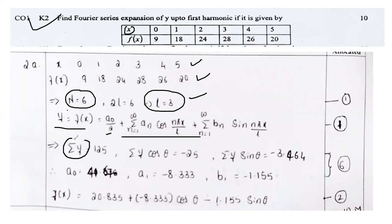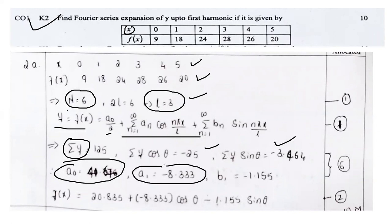Now compute sigma y, which will be equal to 125. Then sigma y cos(theta) equals minus 25, and sigma y sin(theta) equals minus 3.464. Ultimately, a0 will be equal to 40.6. Then a1 — use the formula — equals approximately minus 8 point something (use the calculator, no issues). b1 equals minus 1.15.